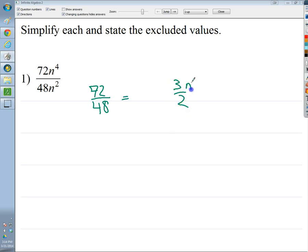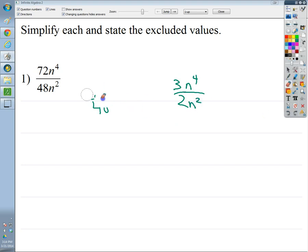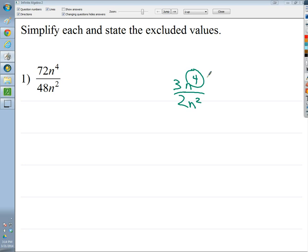From here, I'm left with 3n to the fourth over 2n to the second. Like I said before, if you divide the coefficients of the big brothers, you subtract the little brothers of the exponents. I tend to circle the bigger one to remind me where my final answer is going to go. So I end up with 4 minus 2, and that's 2. So I get n to the second power here. So 3n to the second, and then I still got that 2 on the bottom.